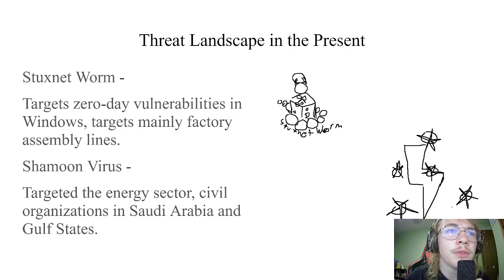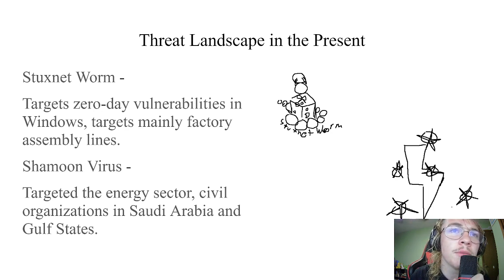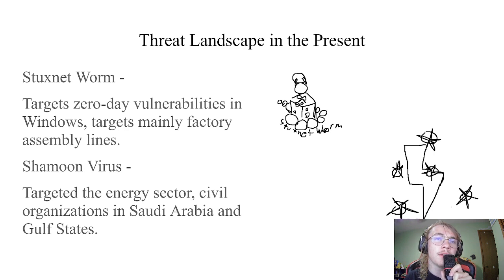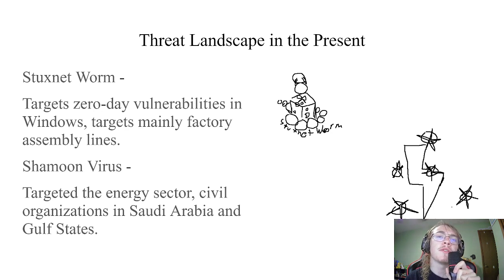Next up is the Shamoon virus, which also targeted sectors — mainly electrical and civil sectors in Saudi Arabia and Gulf states. Like Stuxnet, it was also a cyberweapon meant for espionage in the Middle East, and it was named the most complex malware found. Other examples include CIRCOM, which mainly spreads through email on Windows-based systems, and an email war between the authors of Bagel, Mydoom, and Netsky — an example of an attack on a group of users.